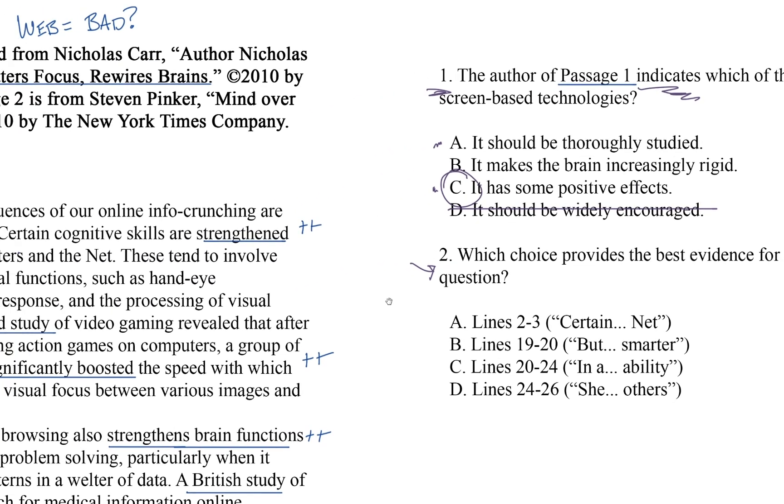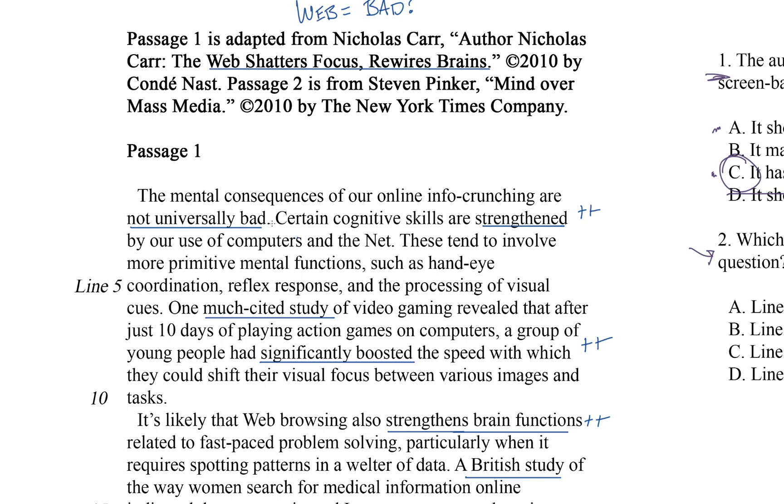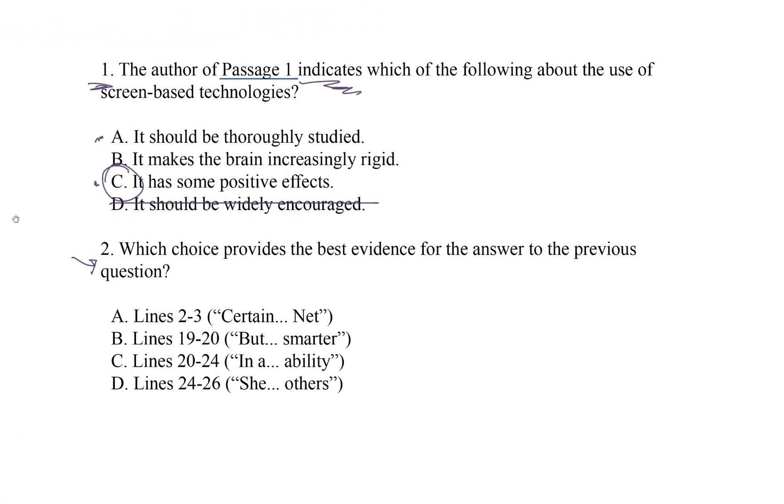Certain cognitive skills are strengthened by our use of computers and the net. This is our answer, right? It matches my answer from the first question and on test day, I would just circle that and move on. Do you see how fast that can be if you were able to find evidence to support your answer when you were doing the first question?